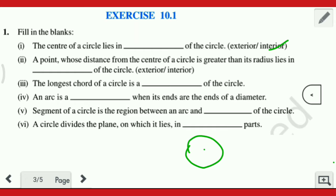The next question: a point whose distance from the center of a circle is greater than its radius lies in dash of the circle. Yeh bol raha hai ki ek point hai jiski jo distance hai center of the circle se, is greater than its radius. Maane paas ek circle hai, is circle ka center hai, aur ek point hai jis ki length circle ke center se radius se bhi badi hai. To woh point outside the circle hai — that is exterior.